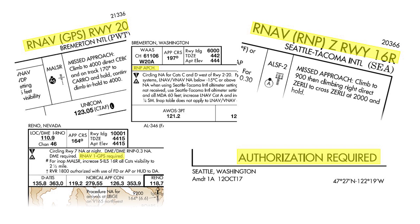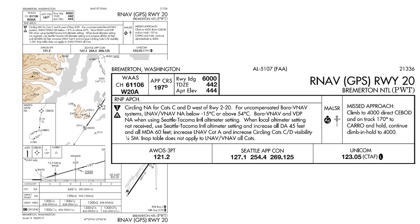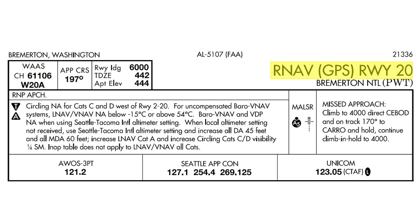Now let's return to the procedure titles and notes that cause so much confusion. Here's a typical GPS approach: the RNAV GPS Runway 20 at Bremerton, WA. Note the procedure title, RNAV GPS Runway 20. That form has long been the FAA standard for approaches based on GPS and GPS enhanced by WAAS. RNAV declares that the procedure depends on your ability to navigate point-to-point on your own. GPS in the title states that you need an IFR-approved GPS to fly the approach, just as ILS, LOC, or DME in the title of a conventional approach declares the type of equipment required.